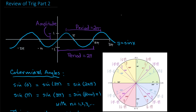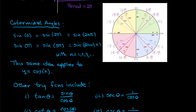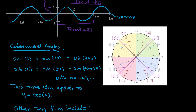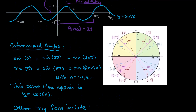Another idea we need to make sure is working well is the concept of coterminal angles. Coterminal means that they wind up in the same location. For example, if we're looking at this graph at negative pi, this value is coterminal with this value is coterminal with this value. The idea is not just being the same value, but being in the same location in the wave.